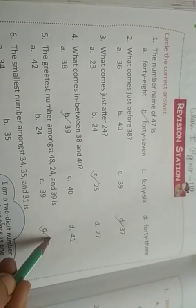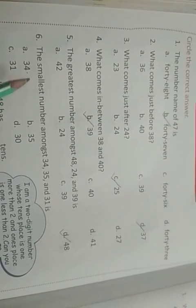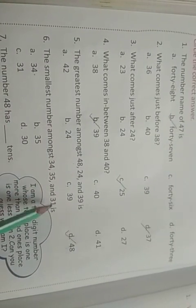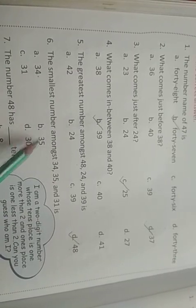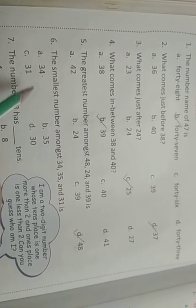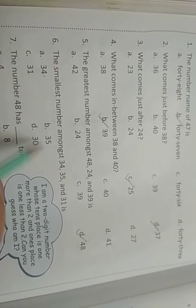Six, the smallest number among us 34, 35, and 31 is... इन तीनों में से smallest number कौन सा है? a) 34, b) 35, c) 31, d) 30. तो यहां सबसे छोटा number कौन सा है? 31.